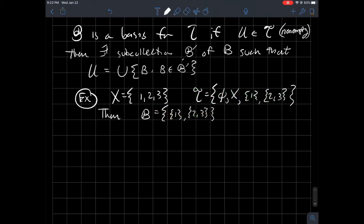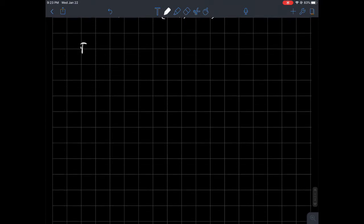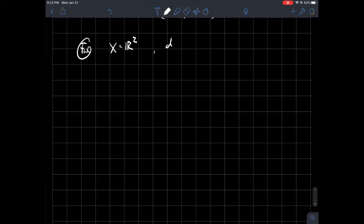Maybe one more example that we run into a lot. I think everybody's pretty comfortable with if X is the plane, so R2, and then D, you have a metric now, so we're going back to thinking about metric spaces and not these more general topological spaces. So D is the usual Euclidean metric, I'll say distance function. That seems a little more accessible.